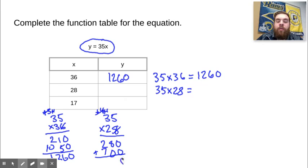Now I add. 0 plus 0 is 0, 8 plus 0 is 8, 2 plus 7 is 9. 980. Now let's solve for where X is 17. Go ahead and solve the problem and come back whenever you're finished.